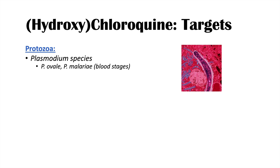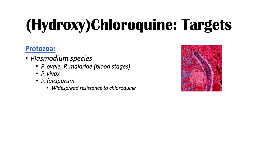Plasmodium species like plasmodium ovale and plasmodium malariae can both be targeted with chloroquine and hydroxychloroquine, especially in their blood stages of infection. Plasmodium vivax is also a species that can be targeted with these medications. But with regards to plasmodium falciparum, this plasmodium has widespread resistance to chloroquine, so we can't use chloroquine when treating it — we'd have to use hydroxychloroquine or another medication.